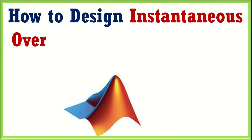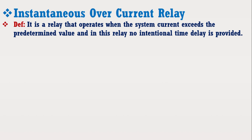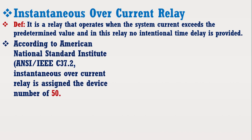Assalamu alaikum friends, welcome to this MATLAB Simulink tutorial. In this tutorial, I am going to teach you how to design an instantaneous overcurrent relay model in MATLAB Simulink software. An instantaneous overcurrent relay can be defined as a relay that operates when the system current exceeds the predetermined value, and in this relay no intentional time delay is provided. According to ANSI and IEEE Standard C37.2, the instantaneous overcurrent relay is assigned the device number 50.